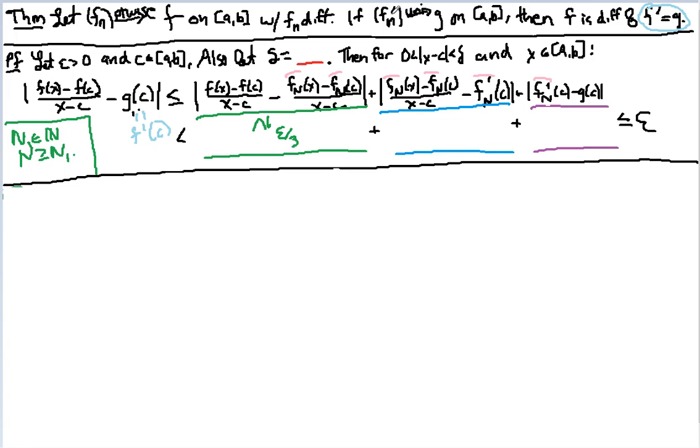Now, notice f prime of n goes uniformly to g. I should have said this at the time - that was actually very important in getting this green epsilon over 3, because we had to show that there exists an n1 that works for every single alpha, because alpha depends on the m and the n that we chose. So that's where that came in.